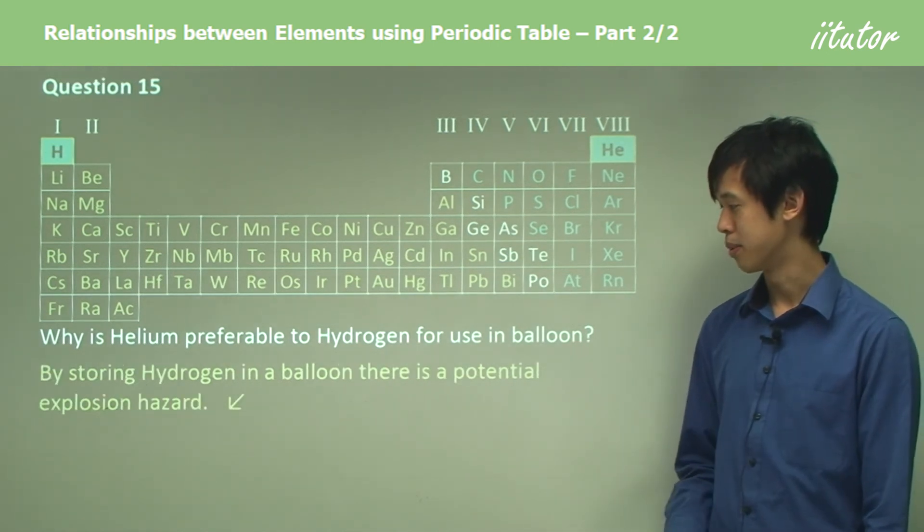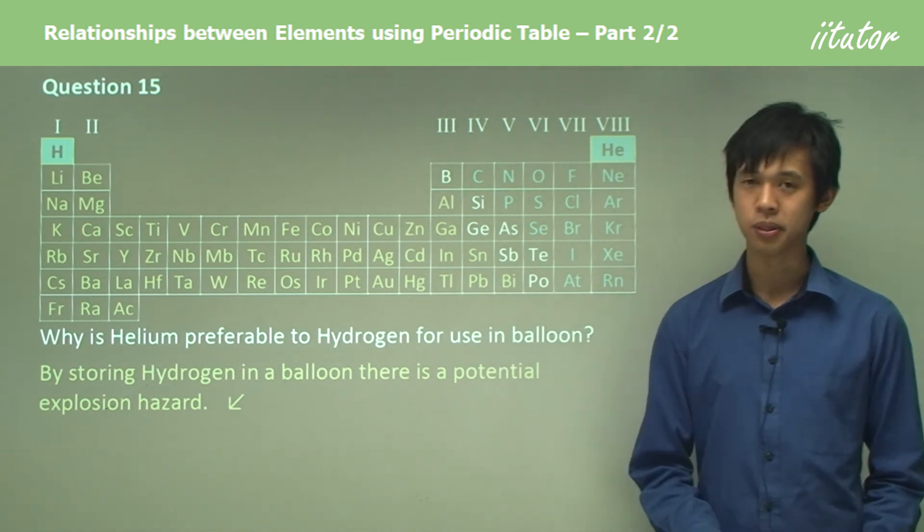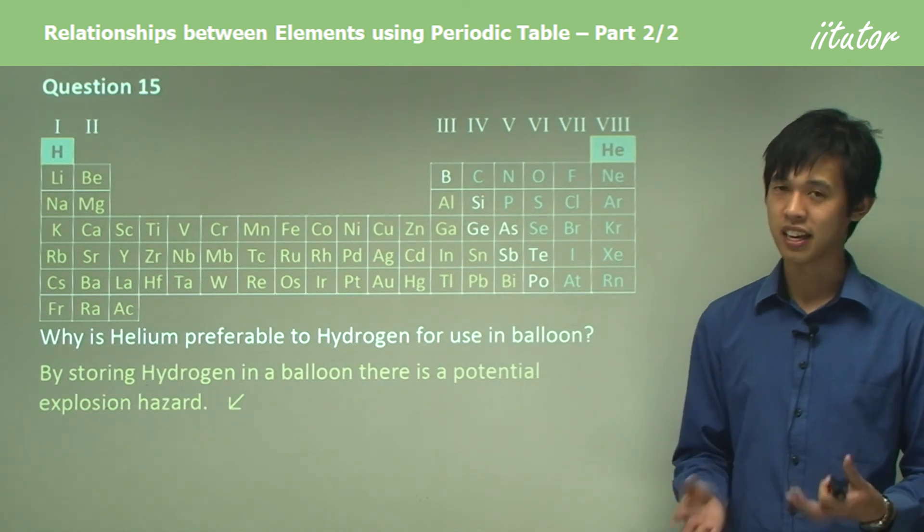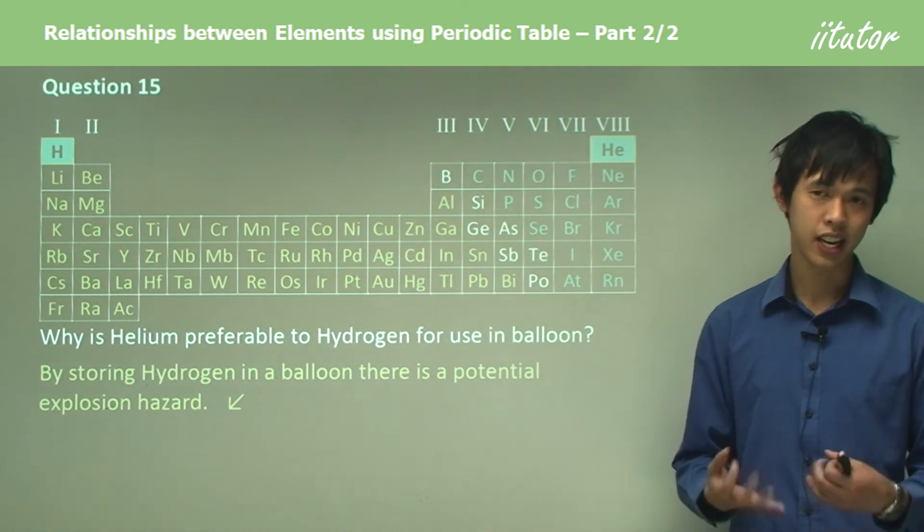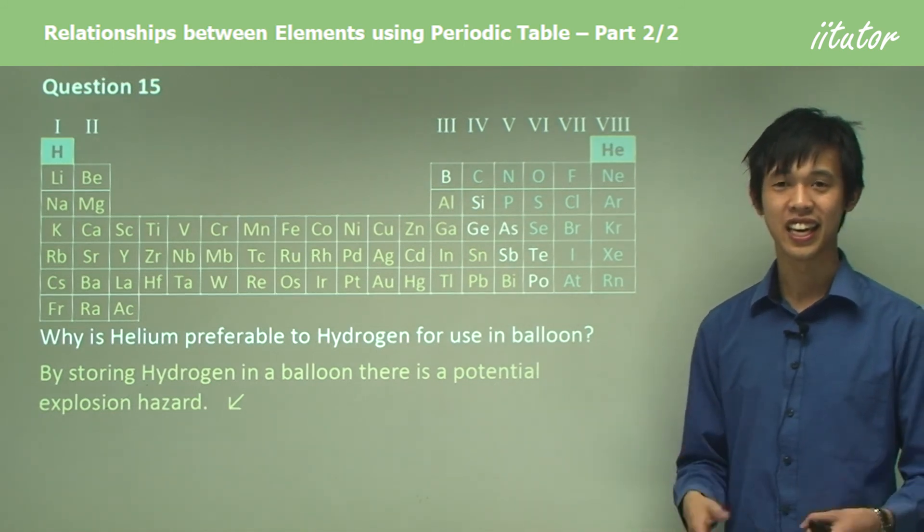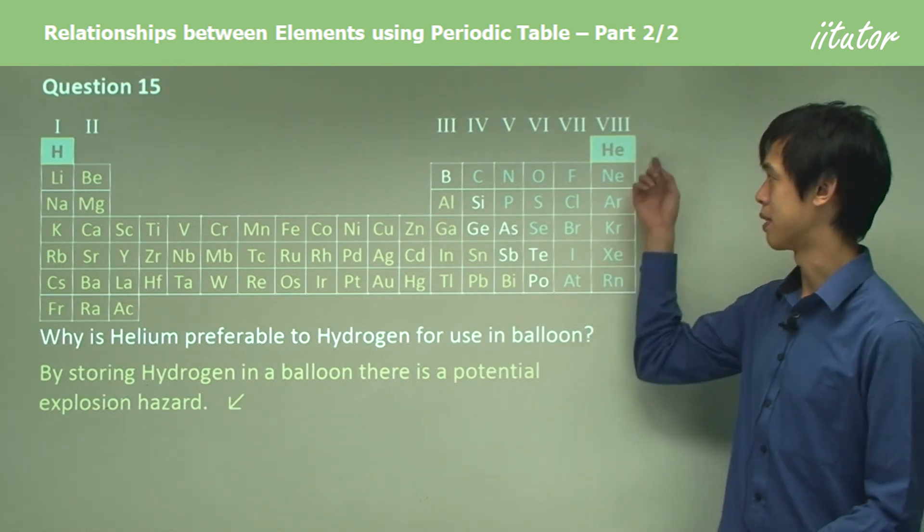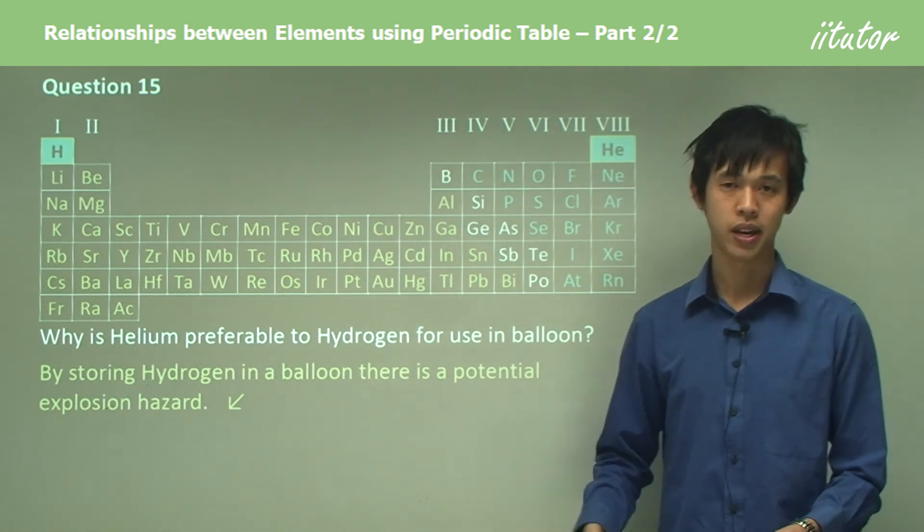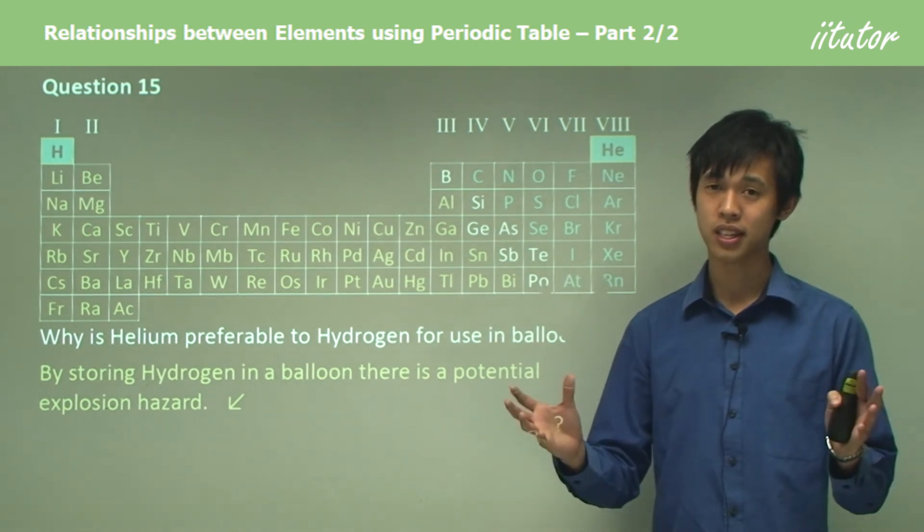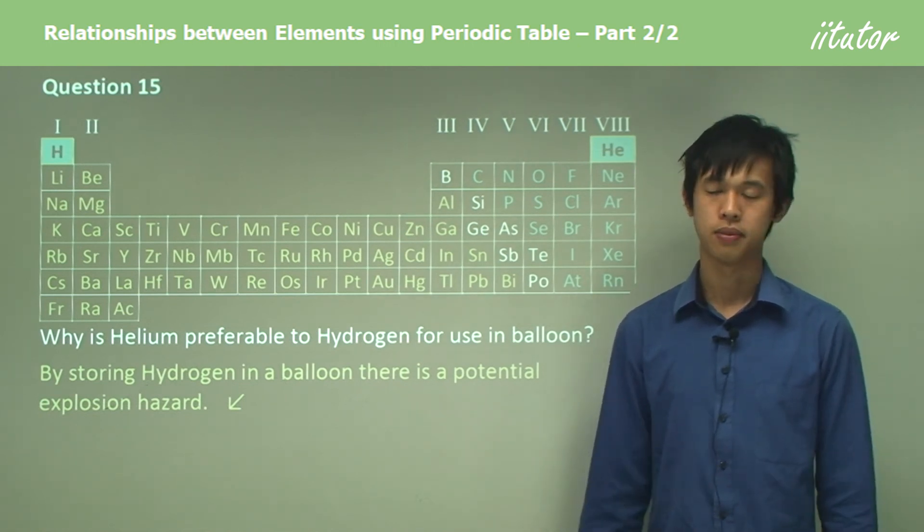By storing hydrogen in the balloon, there's a potential explosion hazard. Keep in mind where we see balloons - we generally see balloons at birthday parties, and what is a key feature of a birthday party? A birthday cake with candles on it. If you've got something that's flammable near candles, that's obviously not a great move. Helium is a much safer choice compared to hydrogen, and that's shown in the whole Hindenburg blimp incident.